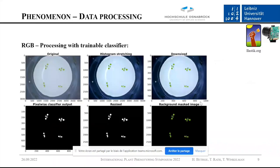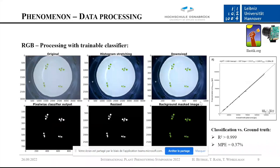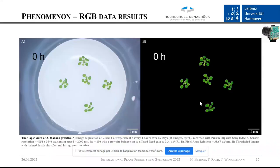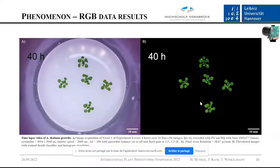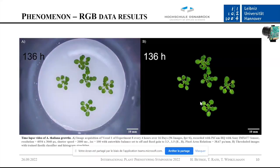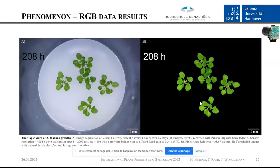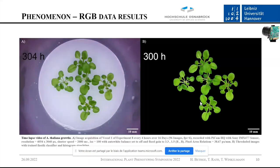Here you see our data processing pipeline. We start with the original image, then apply histogram stretching. We trained a random forest classifier, and from that you get the segmented RGB data. We calculated the mean percentage error of the classification, which was around 0.4%. Here you see a timelapse video of the development of Arabidopsis in vitro and the corresponding segmented RGB images.